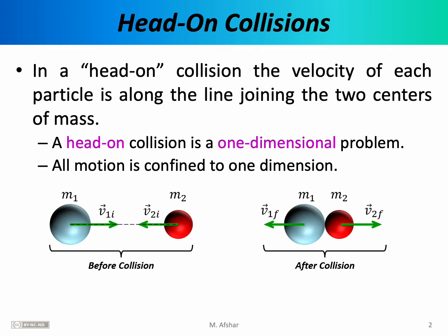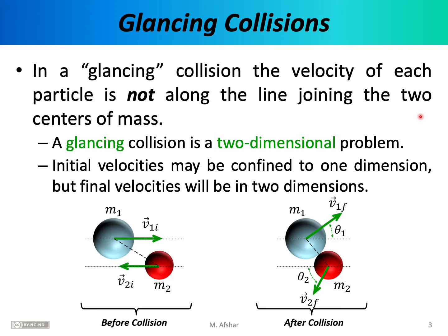Not all collisions are head-on collisions. Some are glancing collisions. In a glancing collision, the velocity of each particle is not along the line joining the two centers of mass. In this example, we have two spheres colliding; we can draw a line connecting the centers — that's the dashed black line. As you can see, the velocity vectors are not pointing along that line. This line is sometimes referred to as the line of action.